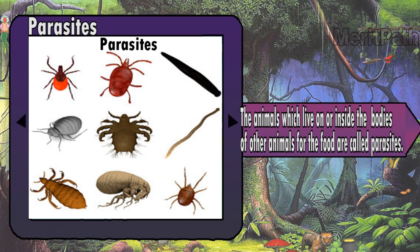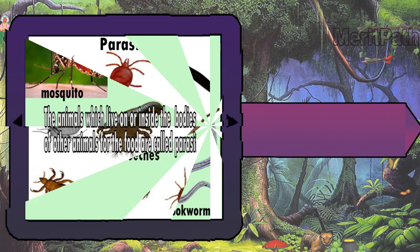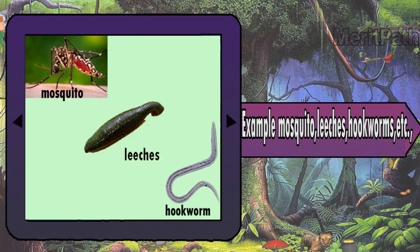Parasites: the animals which live on or inside the bodies of other animals for food are called parasites. Examples: mosquitoes, leeches, hookworms, etc.